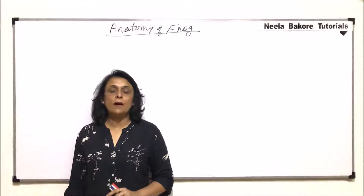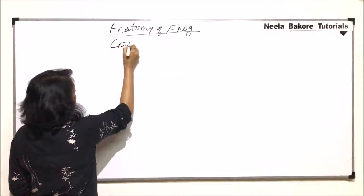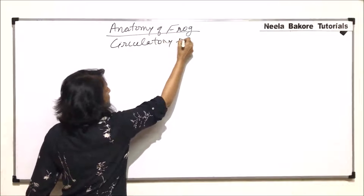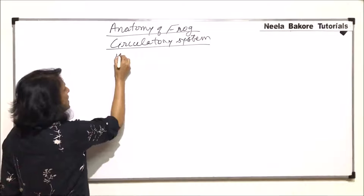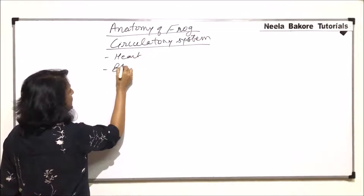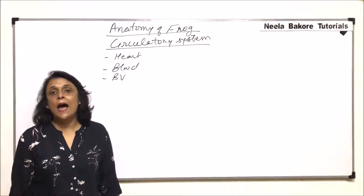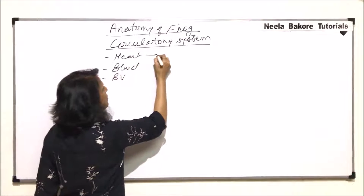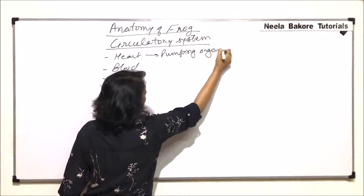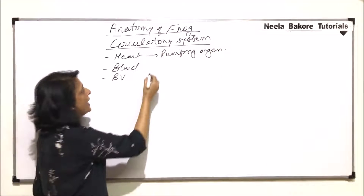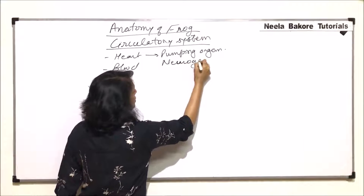In this part, we will be talking about the circulatory system in case of frogs. The circulatory system comprises of heart, blood and blood vessels. We will be talking about the heart first. Heart is the pumping organ and in case of frogs, the heart is neurogenic.